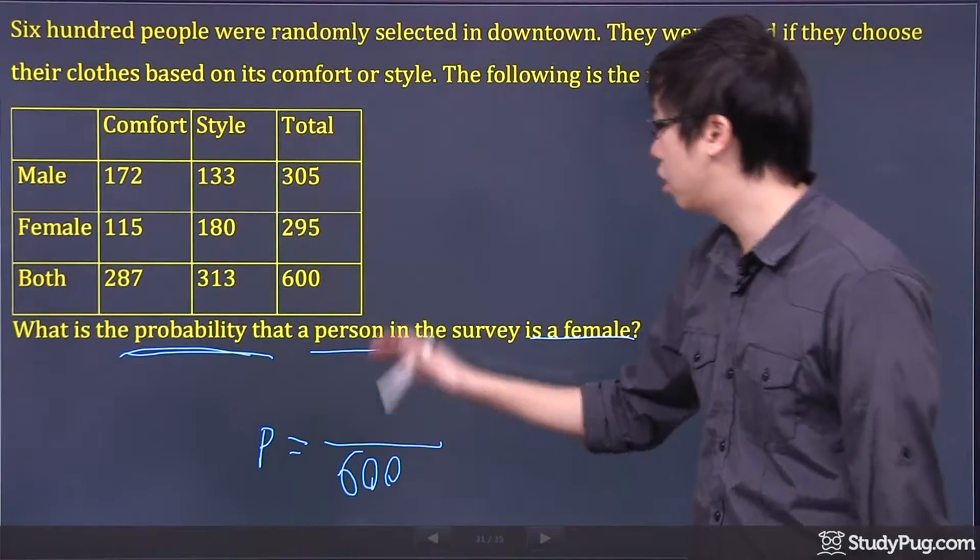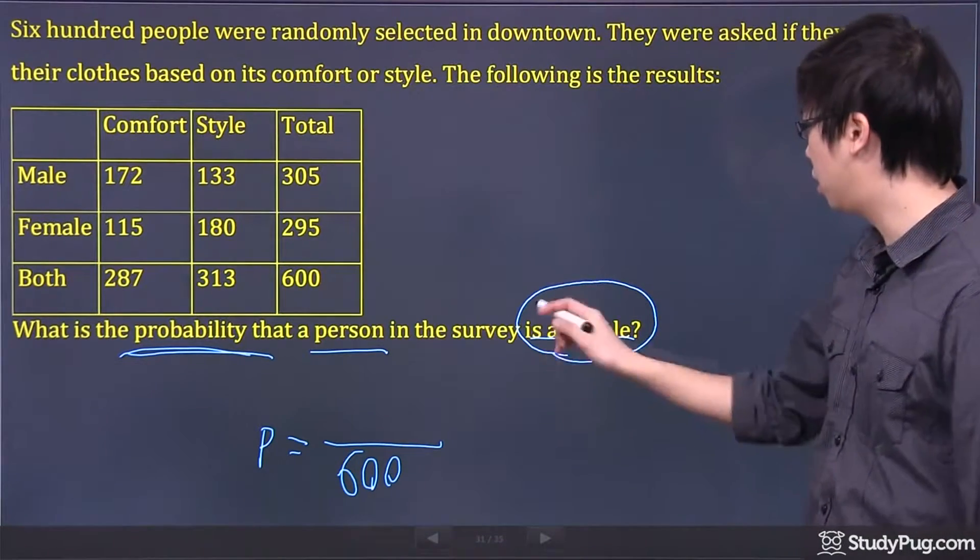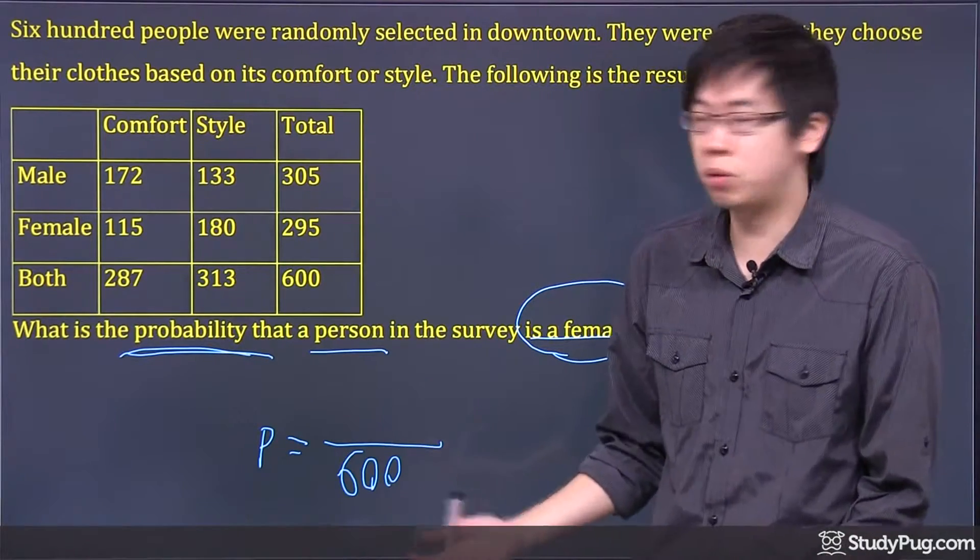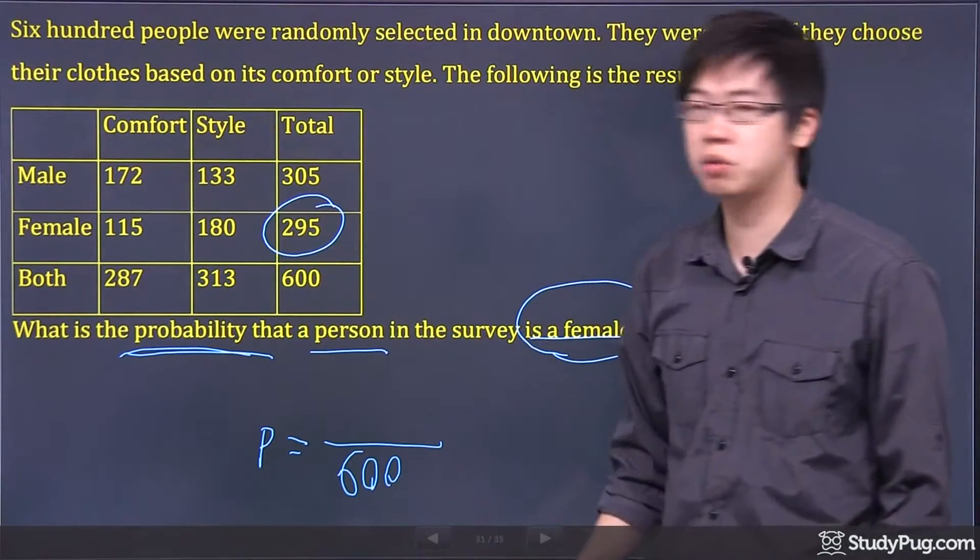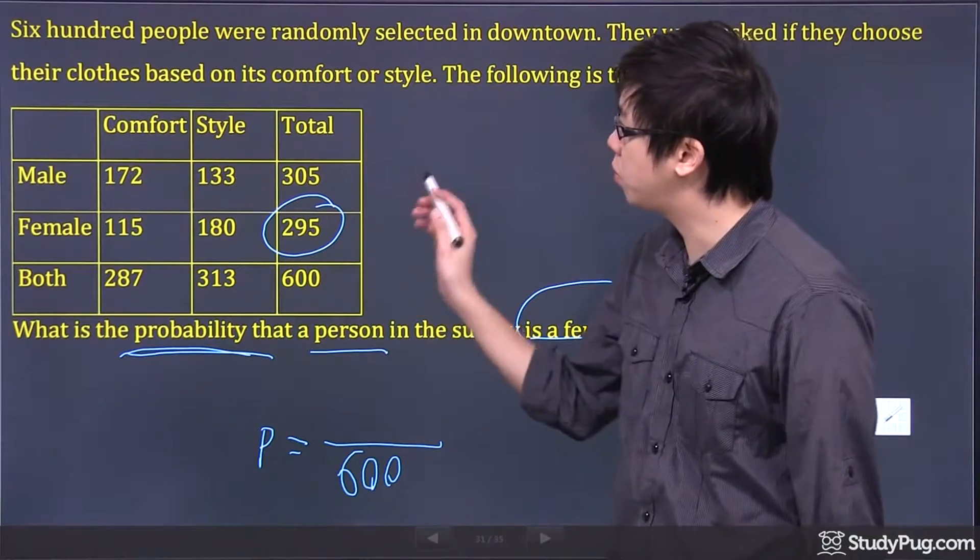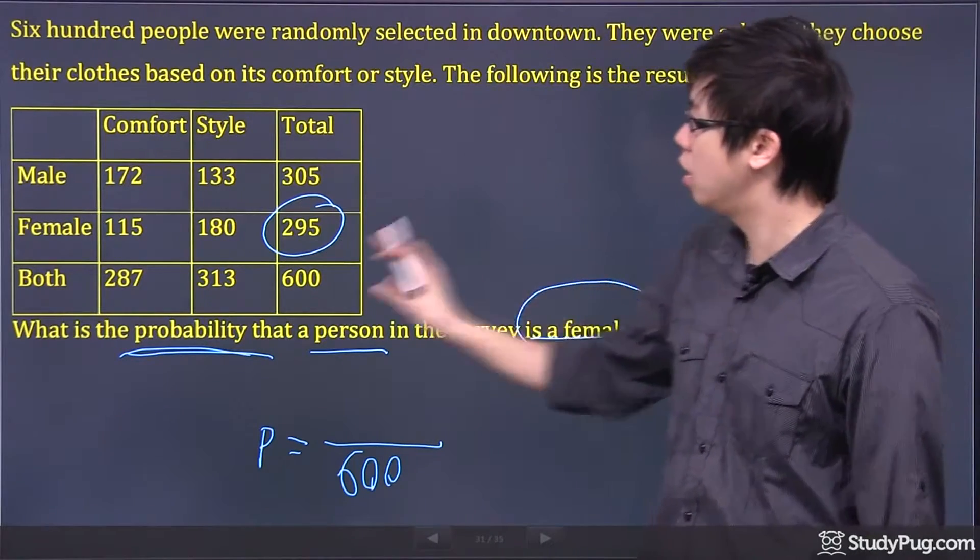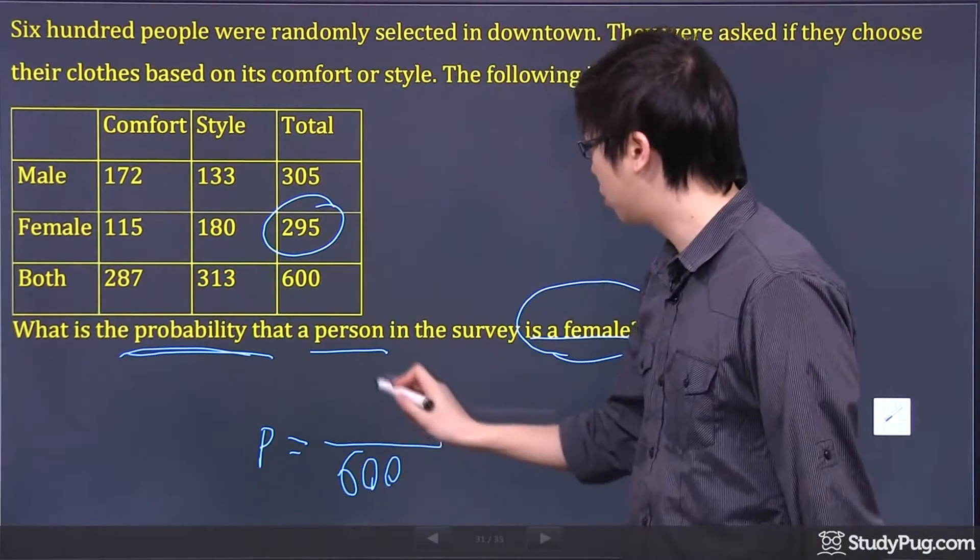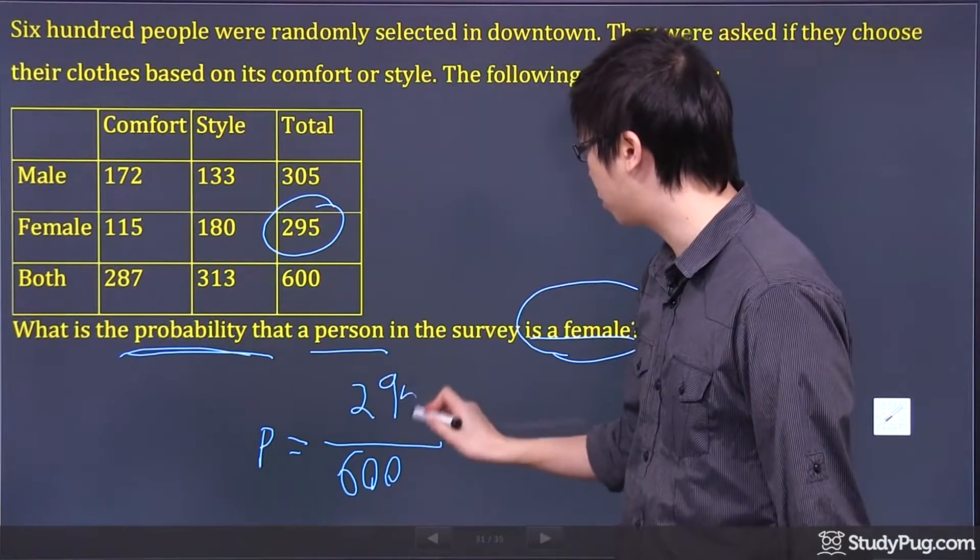You're looking for the probability it's a female. How many females do you have? Right there, 295. 295 people right here.